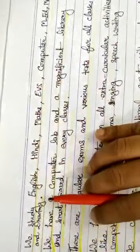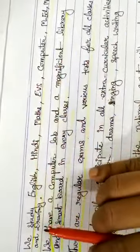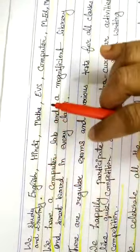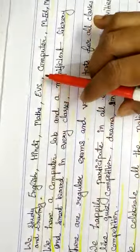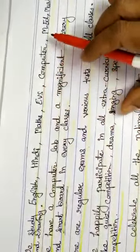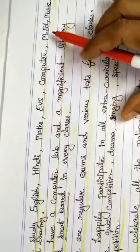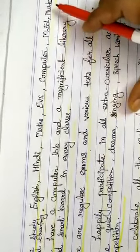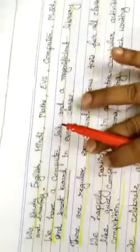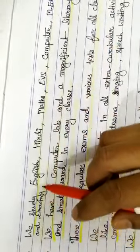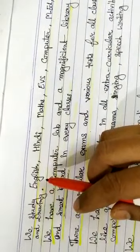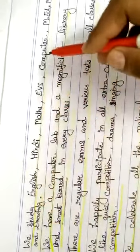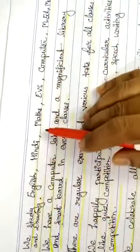Now let's study about what subjects are being taught to you. We study English, Hindi, Maths, EVS (Environmental Science), Computer, MAD (Moral Education) where Vedic values and mantras are taught, Music, and Drawing. Sometimes you have yoga classes also. These are the subjects in class 2 according to your syllabus.